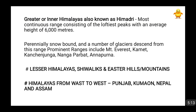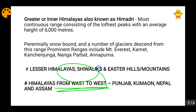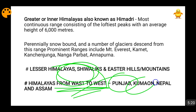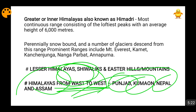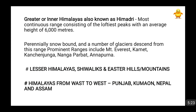The next classification is the Himalayas from west to east — a regional classification — in which the Punjab Himalayas, Kumaon Himalayas, Nepal Himalayas, and Assam Himalayas come. A separate video for this will be made.